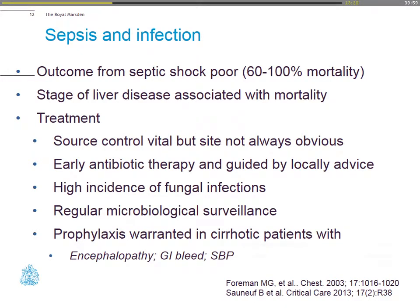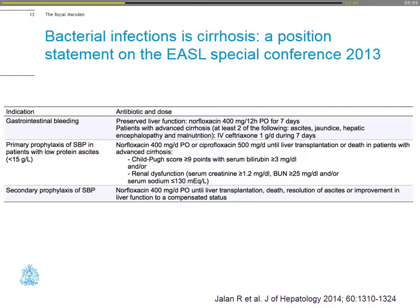Outcomes from septic shock are poor, with huge mortality—anything from 60% to 100%. The stage of liver failure is closely associated with mortality. The keystone in treatment, as in any sepsis management, is source control, but it's not always obvious in patients with chronic liver disease, who often have normal CRPs or normal white cell counts because they don't have a good immune response. Early antibiotic therapy should be guided by local advice, and one needs to consider the high incidence of fungal infection. Prophylaxis is strongly recommended in patients with GI bleeds, subacute bacterial peritonitis, low-protein ascites, and secondary prophylaxis for SBP.